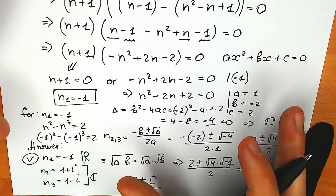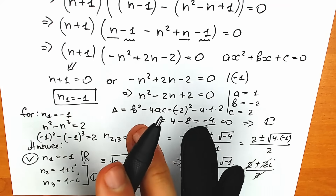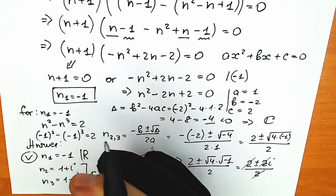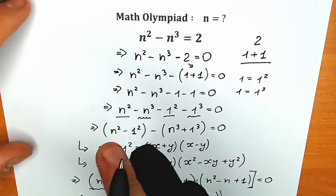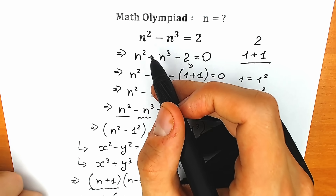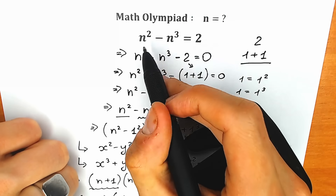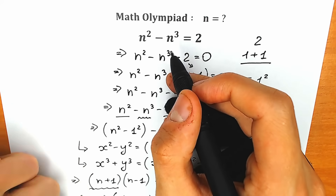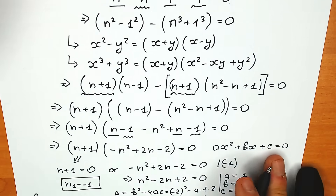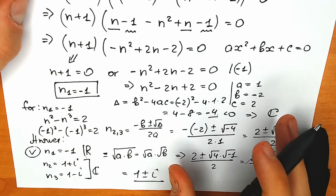This is my solution to this question: one real number root and two complex roots, with a few tricks. There's something called the Fundamental Theorem of Algebra. According to this theorem, you can instantly guess how many roots an equation will have. In our case, we have n-squared minus n-cubed equals 2. Scanning for the highest power — we see 2 and 3 — the highest power is 3, so according to the Fundamental Theorem of Algebra, we will have 3 roots in total.